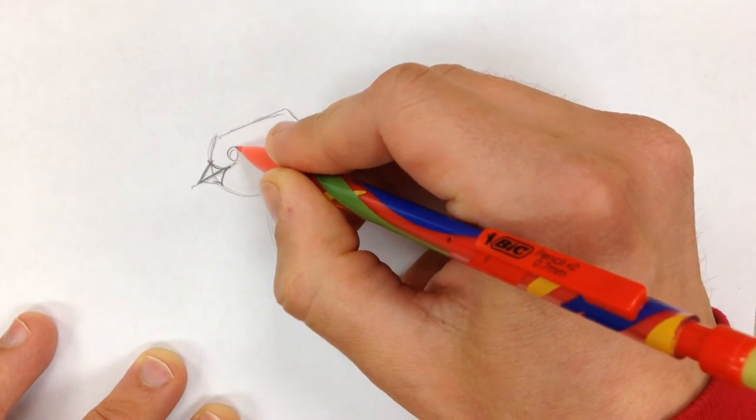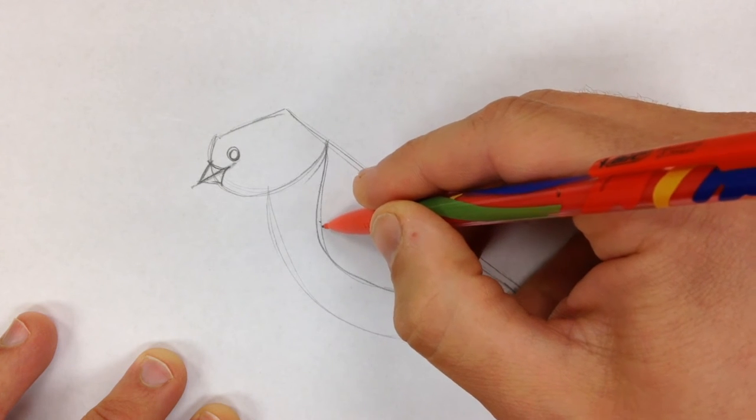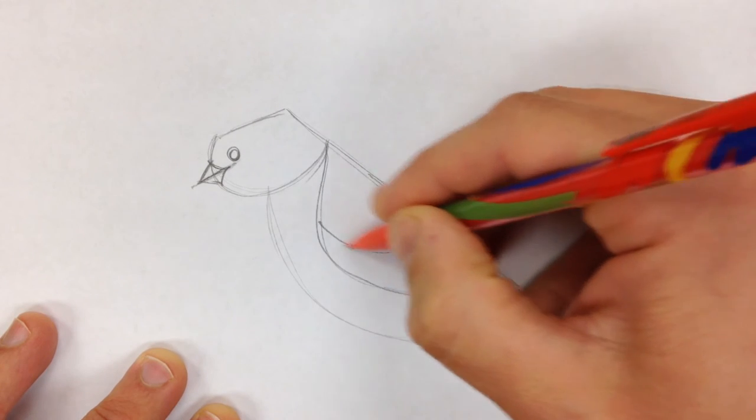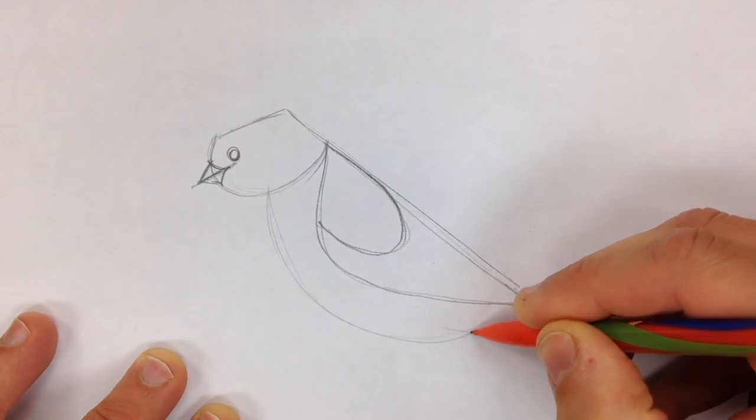I'm going to add the eye, and then there's some really beautiful markings on this. So I'm going to add this one here, and then one here.